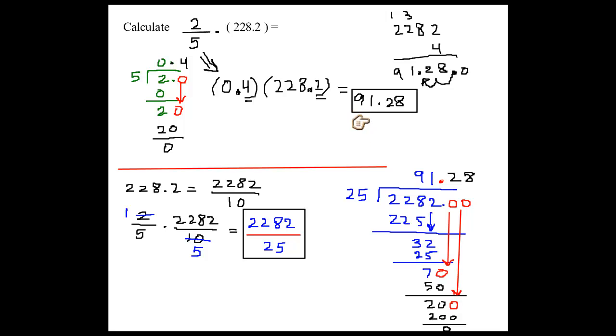You can always change the final answer to whatever format they want. How do you change this decimal into a fraction, Richard? What do you think we should do? Well, since you have two spots to the right of the decimal, that's going to be over 100. So it would be 9,128 over 100.